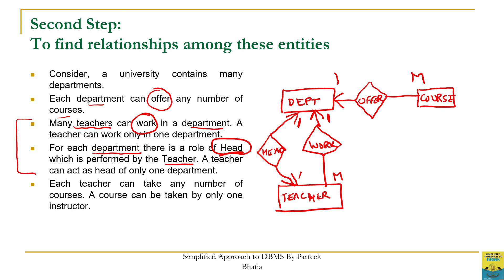Next requirement: 'Each teacher can take any number of courses.' We already have teacher and course as entity sets. The verb is 'take', so we create a relationship named 'take' between teacher and course. For the type: a teacher can take any number of courses, but a course can be taken by only one instructor. Therefore the relationship between teacher and course named 'take' is one-to-many.